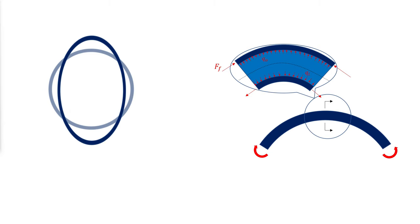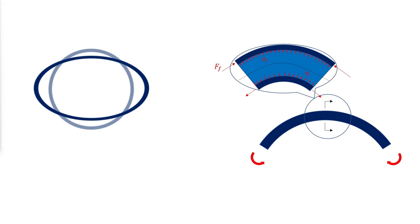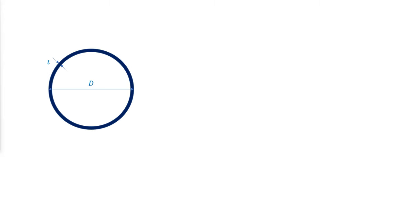Flexural deformation causes ovalization in both straight and curved round hollow steel section members, causing a decrease in strength and stiffness and localized stresses in the circumferential hoop direction. Ovalization also causes a deviation from the longitudinal linear elastic stress distribution assumed in elementary bending theory. The major axis of the ovalized shape is in the plane of curvature for opening moments MIO, and the minor axis is in the plane of curvature for closing moments MIC. The flexural section properties are functions of the flexibility characteristic CR, and significant non-linear ovalization can occur when the member is loaded beyond the effective yield moment MIO, so limiting the nominal flexural strength to MIO may be appropriate.